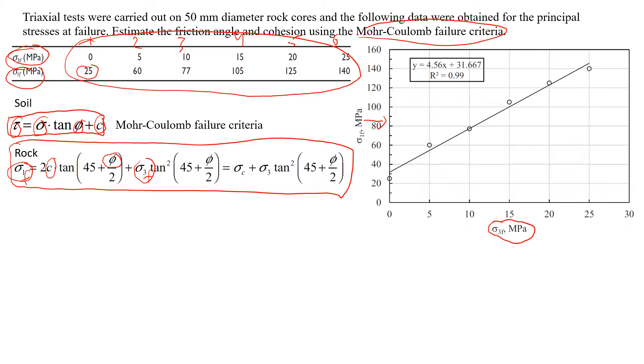So here we have confining pressure at failure sigma 3. So let's look at the first set of data. In this case sigma 3 is zero, so point zero, and sigma 1 will be 25 so it's here, that's the first point. Then second point we continue, sigma 3 is 5.